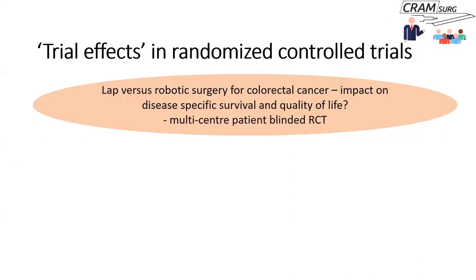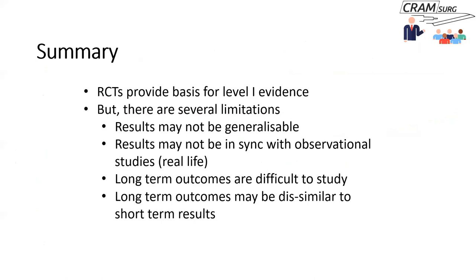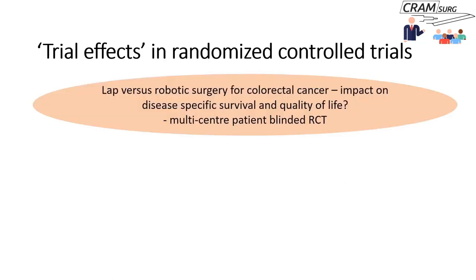Last month we talked about a couple of limitations of randomized control trials. I've got a slide here that summarizes the previous talk. We discussed how some results of RCTs may not be generalizable, using an example from a New England Journal of Medicine paper on the role of iodine in low-risk thyroid cancer. We also talked about how RCT results are not often in sync with observational or database studies, and how RCTs face significant obstacles in studying long-term outcomes, where short-term outcomes might favour one treatment while long-term outcomes may favour the other.